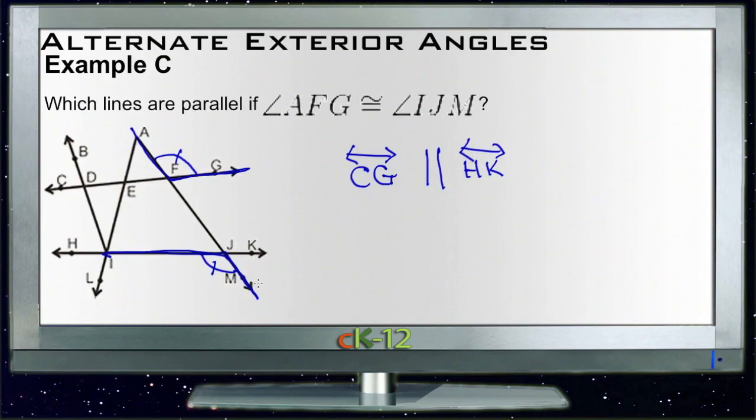In particular, assume that drawings are not to scale unless they say they are, and all you can do is go on the information you're specifically told. So yes, CG is parallel to HK, assuming AFG is congruent to IJM.